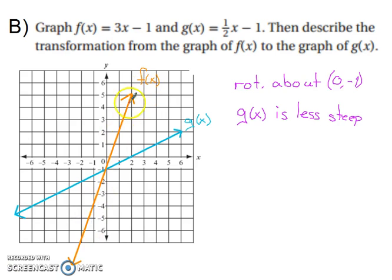So once again, our orange is f(x). Our blue is g(x). And they rotated about the point (0, -1). And g(x) is less steep.